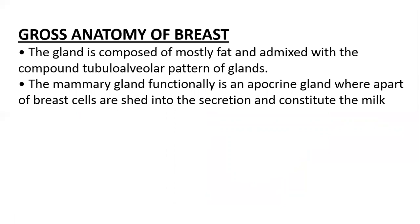The mammary gland is an apocrine gland. In exocrine glands, secretion is divided into three types: holocrine, merocrine, and apocrine. In merocrine, only the secretion leaves the cell. In apocrine, the secretion along with the top part of the cell gets pinched off. In holocrine, the whole cell is secreted. An example of holocrine would be sebaceous glands, apocrine would be the mammary gland, and merocrine would be salivary glands.